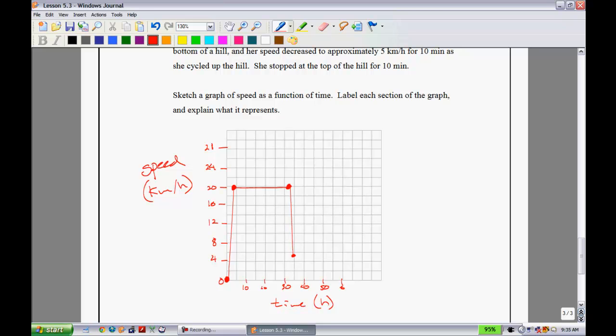What do we know that happened from there? Well, it says for 10 minutes, she then cycled up the hill at that speed. So 10 minutes would take her to approximately like so.